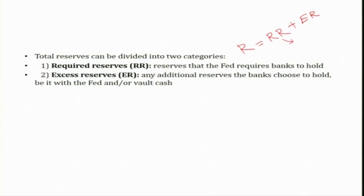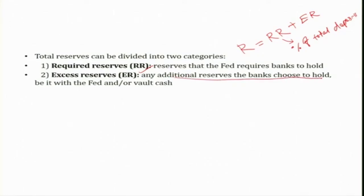For example, in India the required reserve ratio is approximately 4%, though it changes when the central bank announces monetary policy. So required reserves means a certain fraction of total deposits kept with the central banking system. In addition to that, the banking system also keeps additional money in their reserve bank account — any additional reserves the bank chooses to hold, whether in the FED's account or in their own vault cash — this is called excess reserves. Total reserves equal required reserves plus excess reserves.